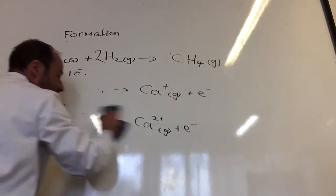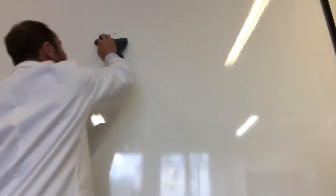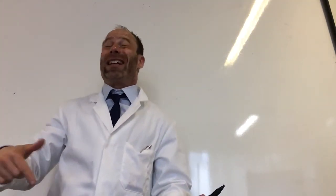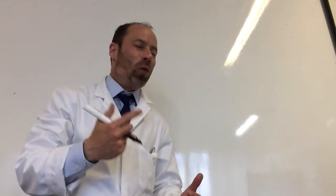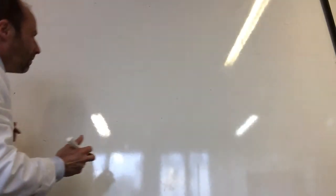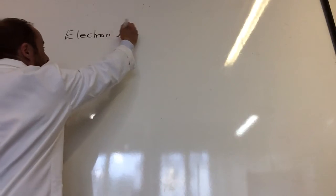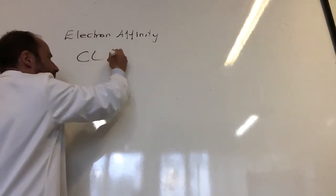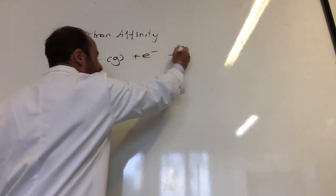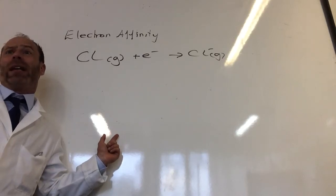So we're going to talk about a couple of new ones now. We've talked about ionization energy, that's removing electrons. We can obviously add electrons to atoms as well, and that's called electron affinity. So the definition of electron affinity is when one electron is added to each atom in a mole of gaseous atoms. So the electron affinity for chlorine will be taking one mole of gaseous chlorine atoms, adding one electron to it to form Cl minus gas. And obviously that would be the first.